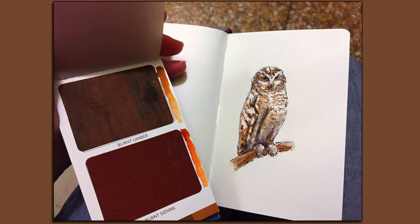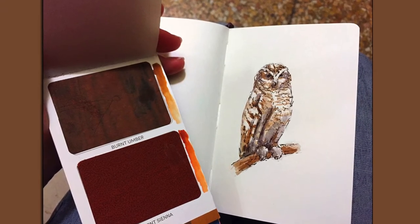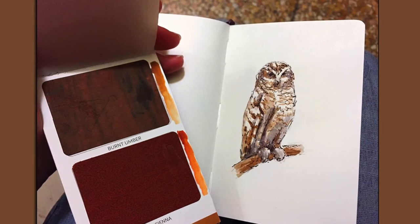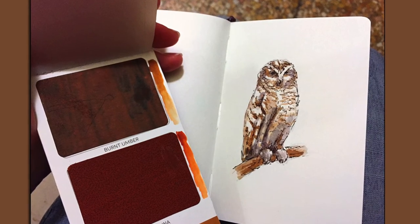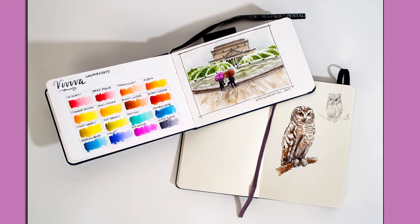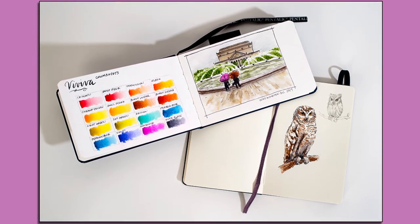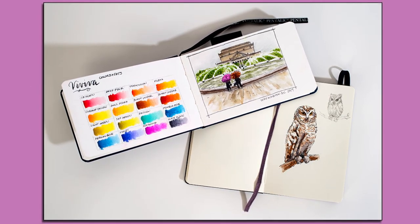I was able to test the Viviva color sheets in the field on a recent trip to Washington, D.C. This is a picture of an owl that I did while I was sitting at the Smithsonian Museum of Natural History. Here are pictures of my sketchbooks of both of the images that I did while in D.C. It was very easy to hold the Viviva color sheets and paint with a water brush.